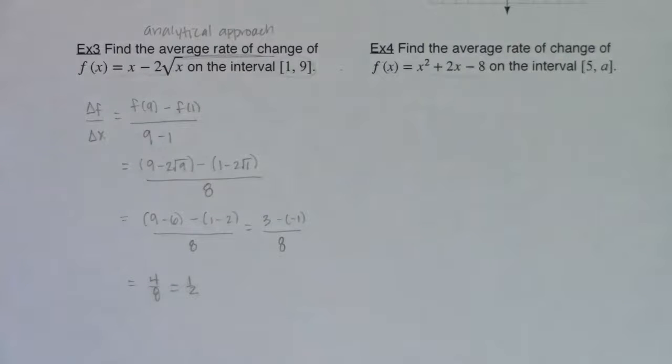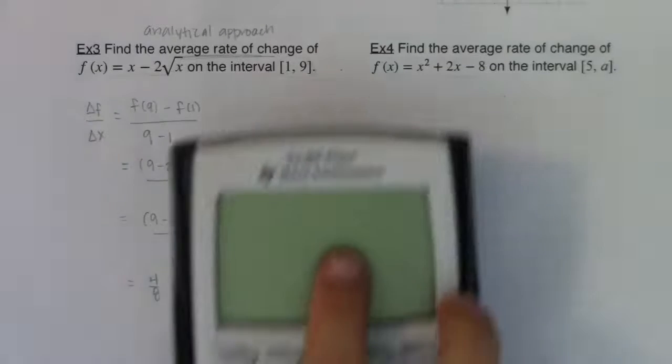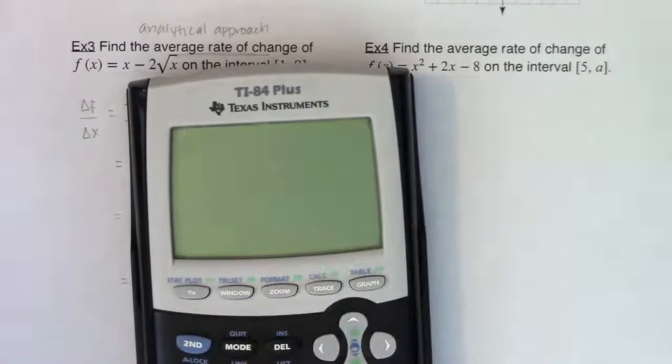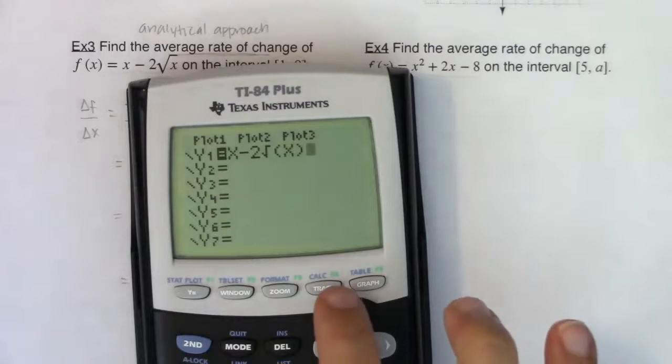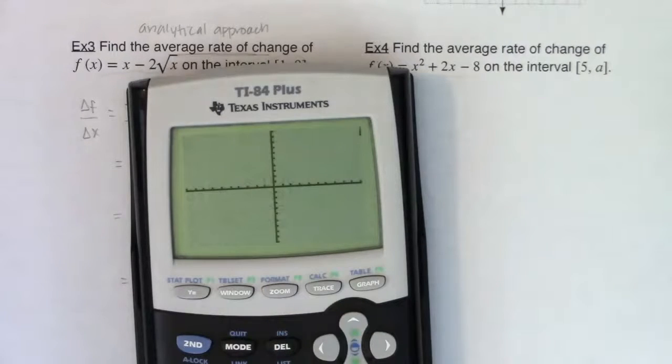All right, so I found the average rate of change for that function. So again, if I were to graph this, just to show you what this would look like graphically, let me go over my y equals and clear out what we have here. I'm going to type in x minus 2 root x. All right, I'm going to hit zoom 6.